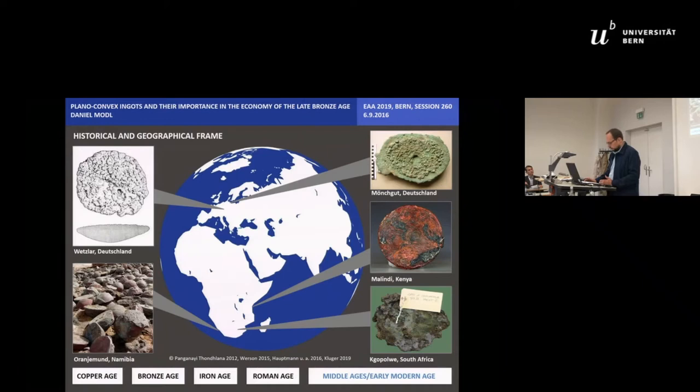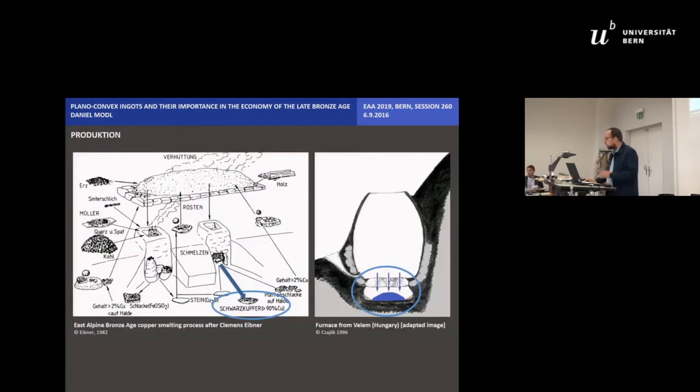Why shows this ingot form for copper such a wide chronological and geographical range and why is it so common in late Bronze Age? The answer should be in the simple production of ingot and mold as well as the circumstance that the PCI is also very suitable for transporting and further processing.